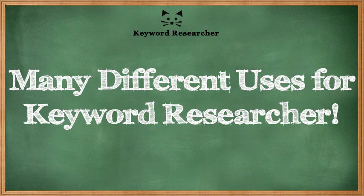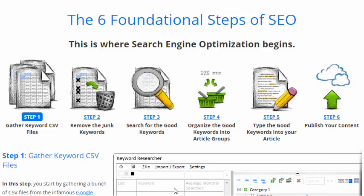In this video we'll go over some of the many different ways you can use Keyword Researcher. We've been working on this app for several years now and it's turned into quite a big program. There are many different ways to use it, but we'll start off by surfing over to the Clever Gizmos website where we have this graphic: the six foundational steps of SEO. No matter how far you go with your website, you should at least understand what's going on in these six steps.